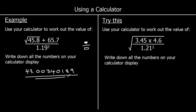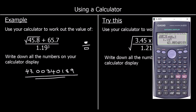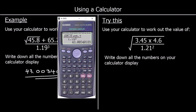And one for you to try here: use your calculator to work out the value of the square root of 3.45 times 4.6 over 1.21 squared. This time you want to press the square root first, as the whole thing is under a square root, then the fraction button — so the fraction is inside the square root. We've got 3.45 times 4.6 on the top line, click to the bottom line, and 1.21 squared. The answer is 3.29232798.